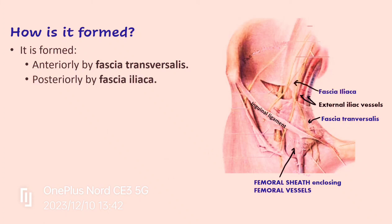There is another structure not labeled in the diagram — the femoral nerve. The femoral nerve is not enclosed in the femoral sheath; it lies outside the femoral sheath.